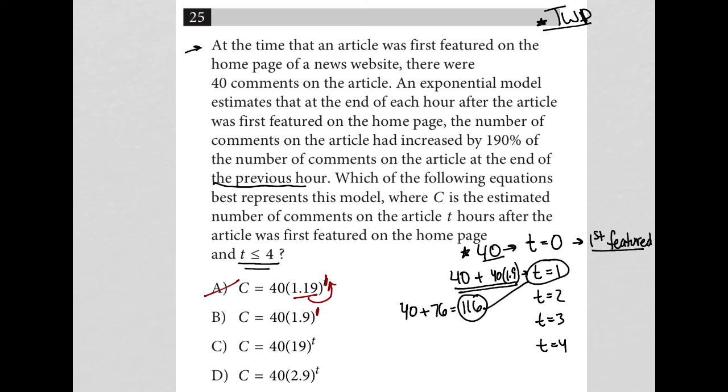Here again I'd have a first power, 1.9 to the first power is just 1.9. So I'll try in my calculator 40 times 1.9, which equals 76, not 116. So choice B is gone. Choice C, replace T with 1. 19 to the first power is 19. 40 times 19 is 760, so that's also not correct.